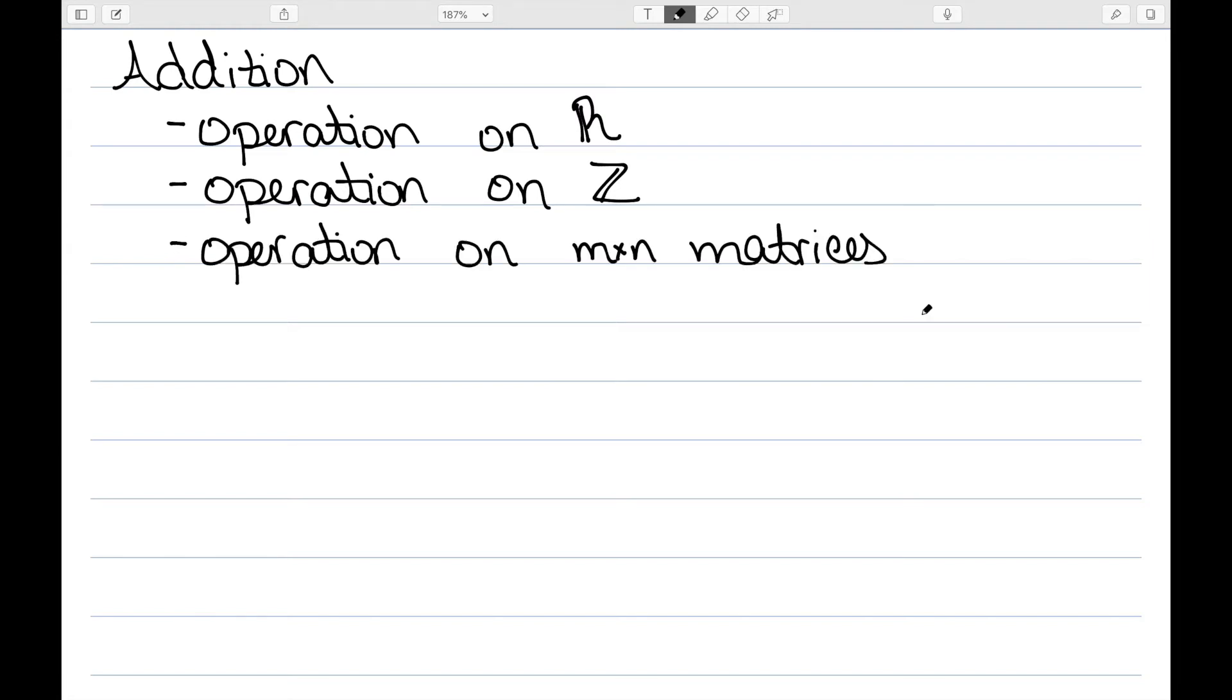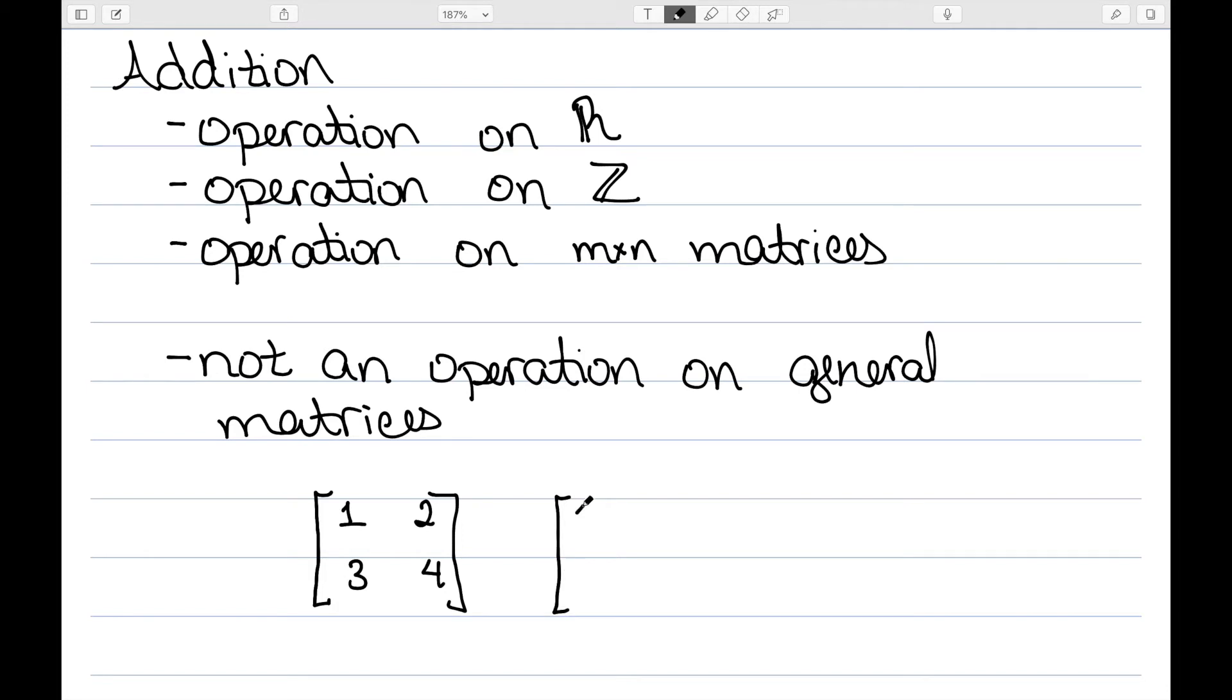It's also an operation on m by n matrices. So if I have two m by n matrices, I can definitely add them and get a unique answer that is still an m by n matrix. However, it's not an operation on general matrices. As an example, if I have this matrix 1, 2, 3, 4, and another matrix 1, 2, 3, 4, 5, 6, and I try to add them, this is not defined. So this is not an operation since we need operations to be defined no matter what my two inputs are. So it's not an operation on general matrices. As long as I guarantee all my matrices are of the same size, it's an operation. But as soon as I move to general matrices, I lose my operation.